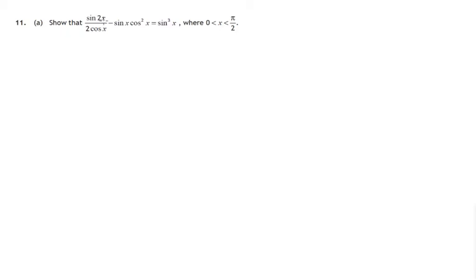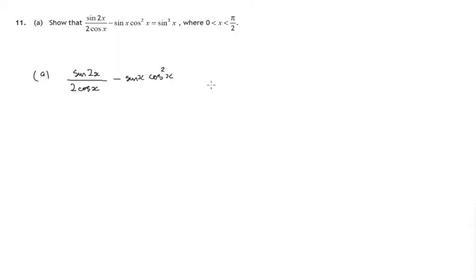In this question we have a trigonometric identity to prove. We're trying to prove that sine 2x over 2 cosx minus sine x cos squared x is identical to sine cubed x. So let's start with the left hand side and concentrate on that expression to see what we can do with it.